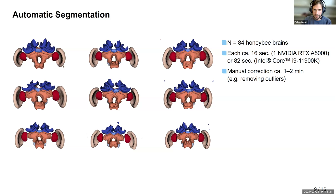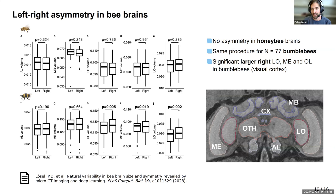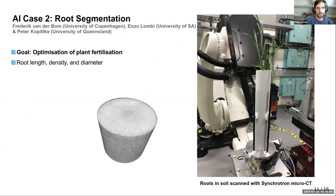Unfortunately for the honeybee we couldn't find a statistically significant larger right side. We then repeated the same procedure for 17 bumblebees, and here we could find larger right lobuli and meduli — areas belonging to the visual cortex. The second AI case is about root segmentation, where we had really huge data and could not scale to 256 voxels.